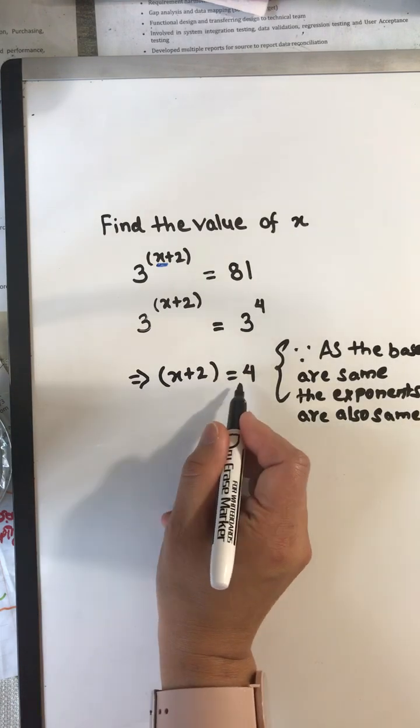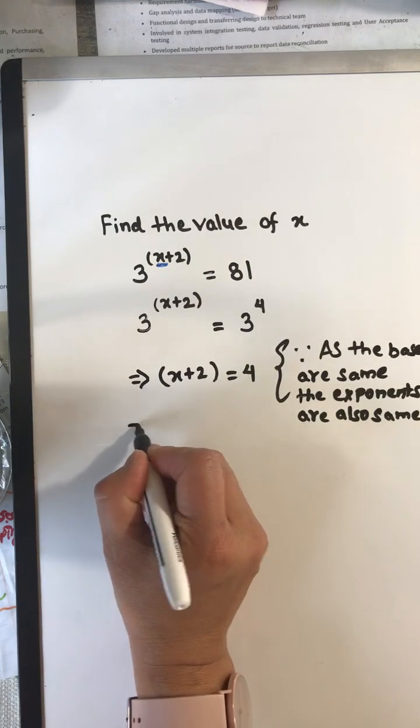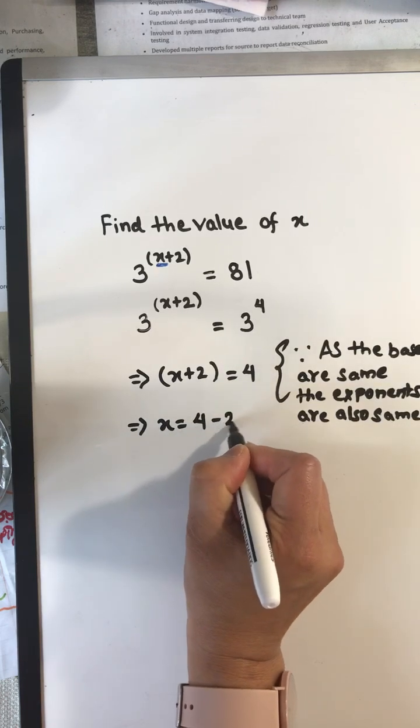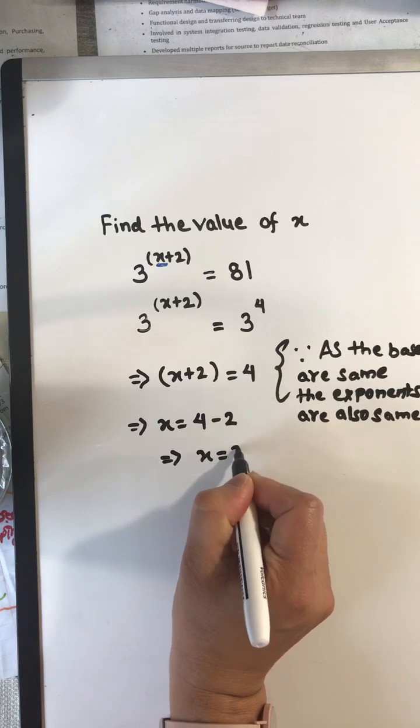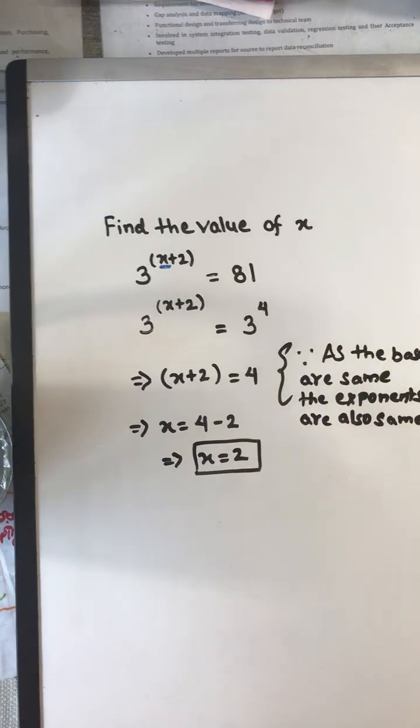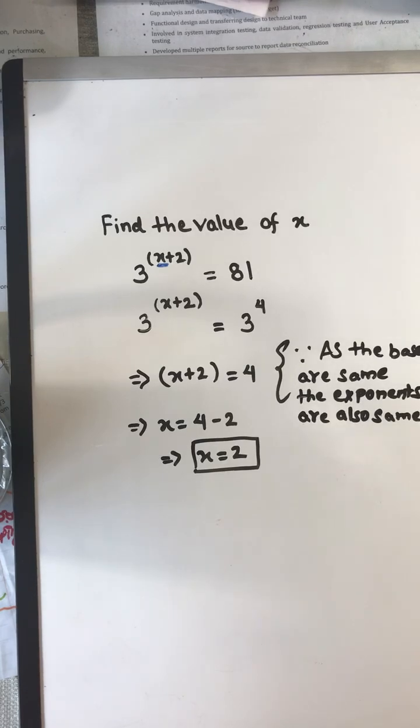So x plus 2 equals 4, which gives us x is equal to 4 minus 2, which gives us x is equal to 2. So the value of x is 2. This is how we can find the value of x in the exponential expression.